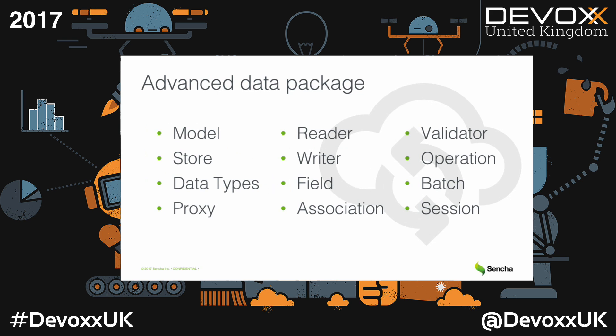We have all the classes you need for managing data: models, stores, and fields with different types. You can use different proxies to communicate with the server using AJAX, JSONP, REST API, and others. Readers and writers handle data in JSON, XML, and Array formats, and you can configure your own reader to get data from any possible format. Associations support one-to-one, one-to-many, and many-to-many relationships. Validators handle data constraints. Create, update, and destroy operations can be batched together into a session for packaged data manipulation to handle transactions.